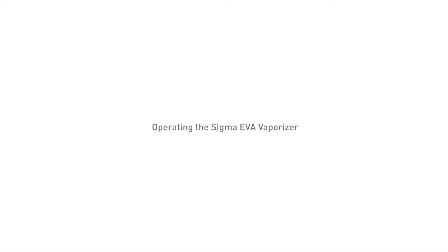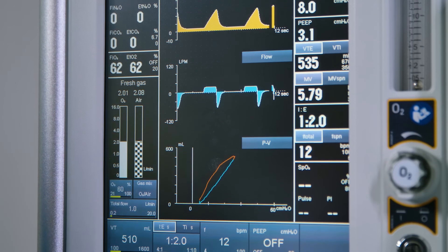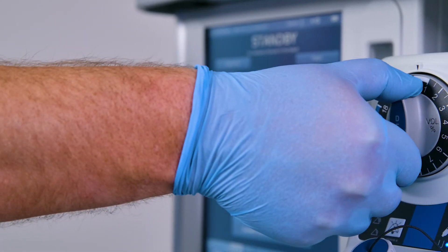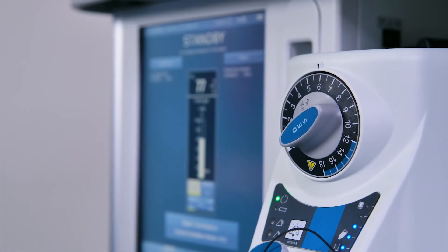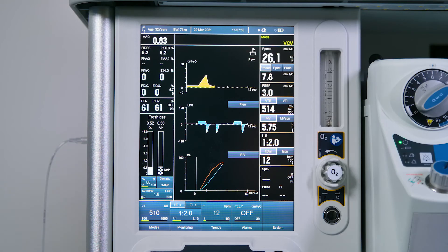Operating the Sigma EVA Vaporizer Delivering Anesthetic Agent. Check that the power supply indicator is continuously illuminated. Set the required fresh gas flow on the anesthetic machine within the range of 0.2 to 15 litres per minute. Push in the control dial and rotate anti-clockwise to set the required agent concentration.